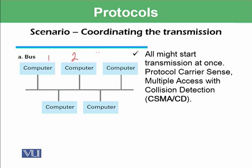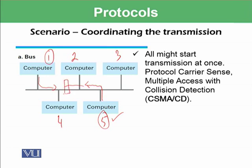This is computer number 1, 2, 3, 4, and 5. If computer number 1 wants to communicate with computer number 5, computer number 1 will give a signal on this bus that would be accessible to all of the computers, and computer number 5 will get that signal and process whatever has been said in the message. However, it may happen that computer number 1 and computer number 5 both start sending messages simultaneously, so one message is coming from here and another is going from here, and when these messages reach a certain point, they would collide.